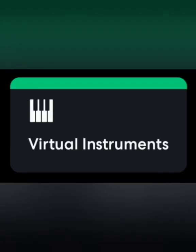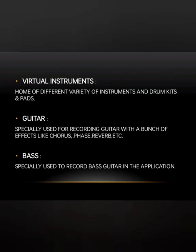One of the most important features of BandLab is Virtual Instruments. Using these, you can create professional tracks. BandLab offers different kinds of instruments in the virtual instrument section: guitar, basses, strings, synths, drum kits, percussions, and wind instruments. This feature is a little different from the Sampler and Looper because you need a basic knowledge of instruments to create songs using it.